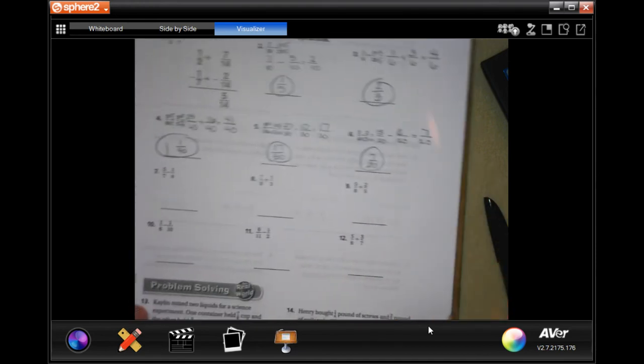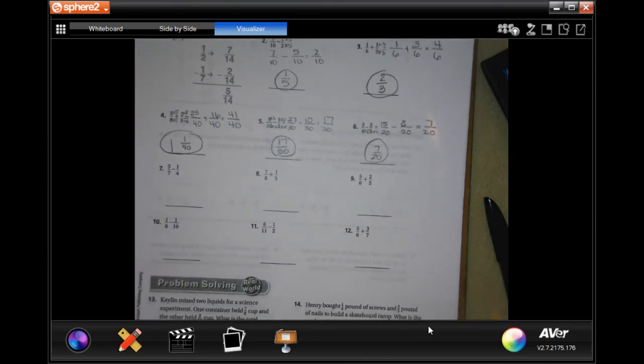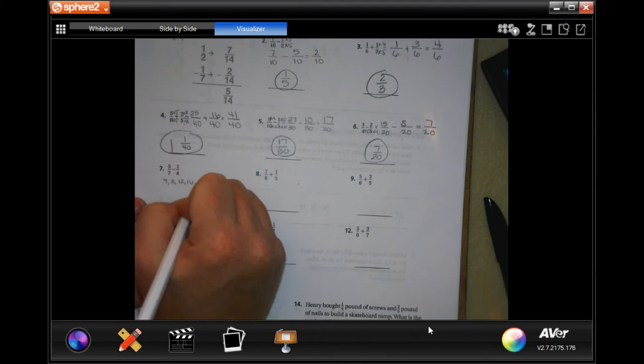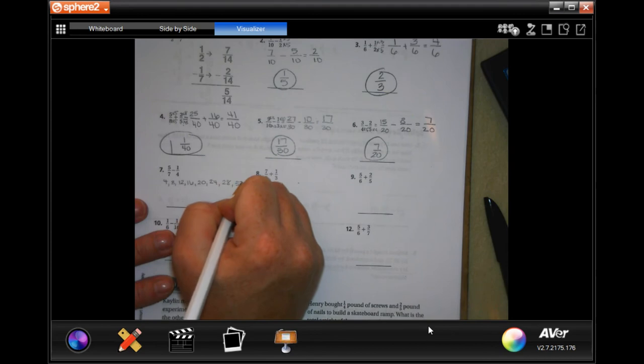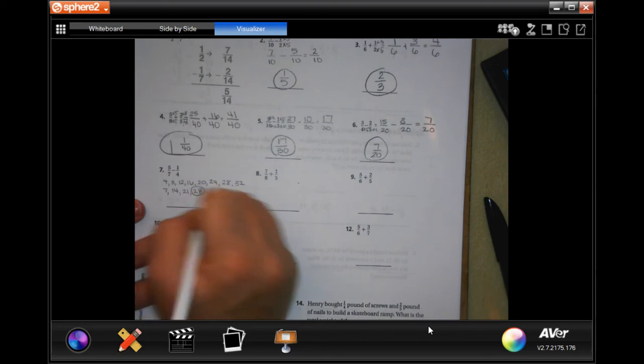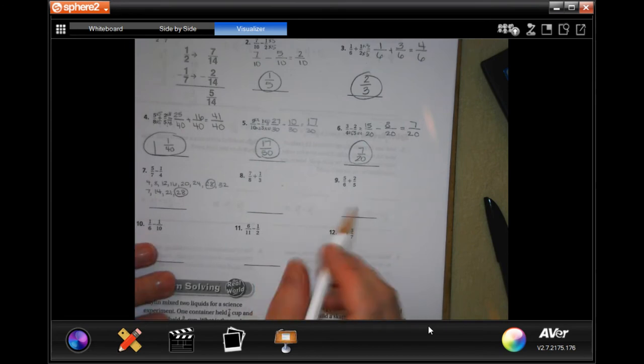You guys finish up through twelve, you can totally do this. If you need to write out your multiples of the denominators and see where it gets you: four, eight, twelve, sixteen, twenty, twenty-four, twenty-eight, thirty-two. Seven, fourteen, twenty-one, oh twenty-eight there you go. Sometimes you gotta write them out until they match up.